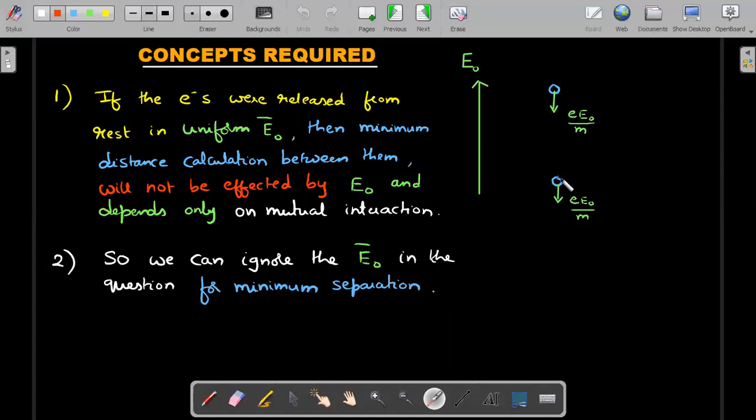So the minimum distance calculation would not get affected. Yes, path will get affected, but the minimum distance between the two will not get affected even if I don't assume the presence of E₀. So we can ignore the E₀ value in the question for minimum separation.